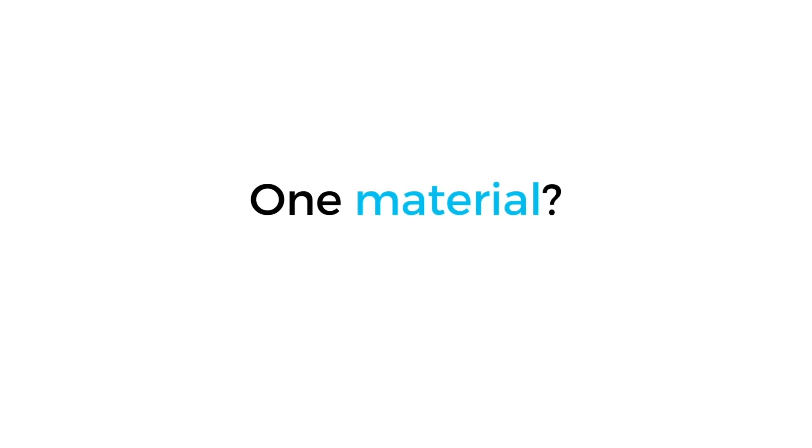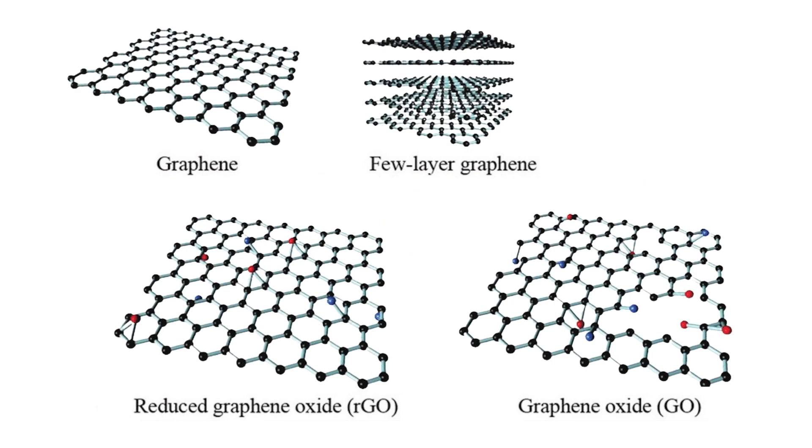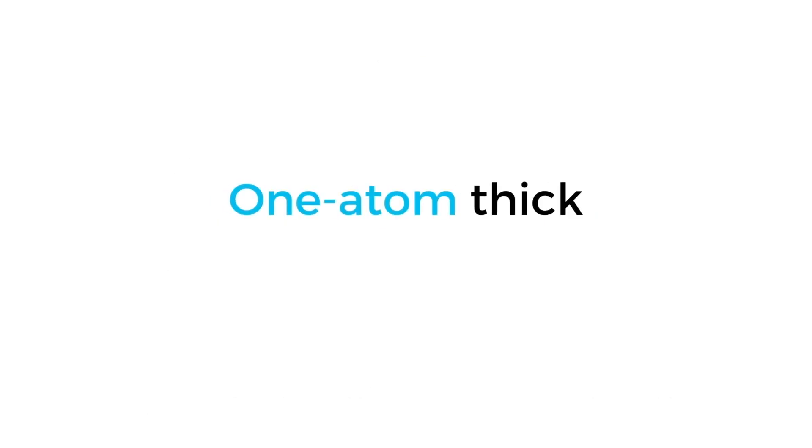Many people think of graphene as a single material, but in reality it is a family of carbon-based nanomaterials which are available in various atomic structure configurations: graphene, few-layer graphene, graphene oxide, and reduced graphene oxide.